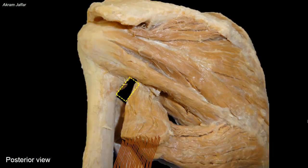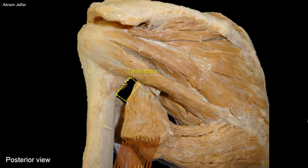Now viewed from behind, the quadrangular space is bounded by teres minor muscle instead of subscapularis, because teres minor arises from the posterior aspect of the lateral border of the scapula and passes to the posterior facet on the greater tubercle of the humerus, while subscapularis is located anteriorly and inserts into the lesser tubercle, which can only be seen anteriorly. The other three boundaries of the quadrangular space are the same: teres major, long head of triceps, and the humerus.